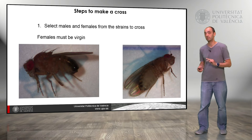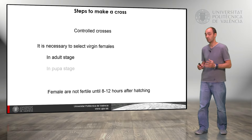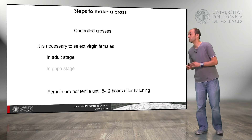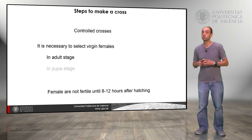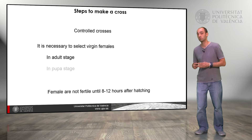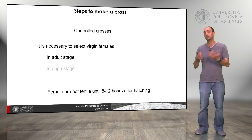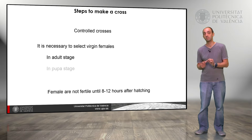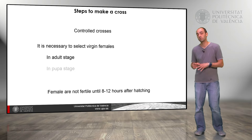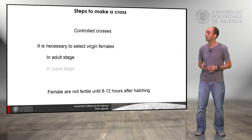We can ensure this in two different ways. We can select the females in the adult stage. Females are not fertile until 8–12 hours after hatching from the pupa. So one thing we can do is to remove all the adult flies from the bottle where we store the flies, wait until new adult flies arise, then select the females — we can be sure those females are virgin because they are not yet fertile. But we do have to wait a little time.